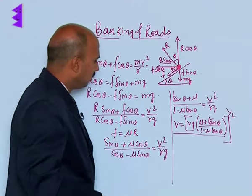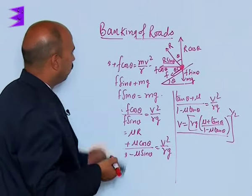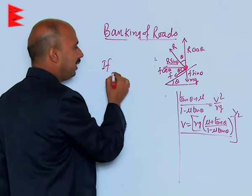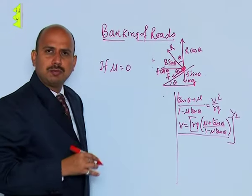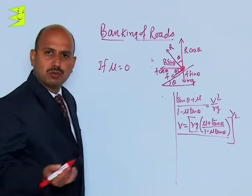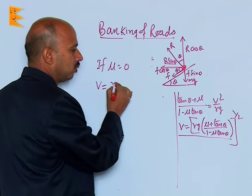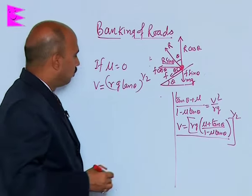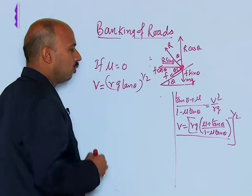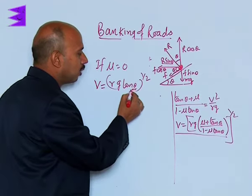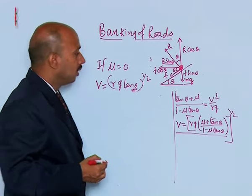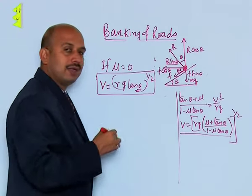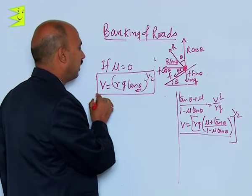Now, suppose we take mu equal to 0, meaning the coefficient of friction becomes zero due to smoothness or other causes. Then v is equal to the square root of rg tan theta. So the speed on the banked road can be managed by giving this angle of inclination, that is by banking. In that case, the road does not cause much wear and tear of the tyre and we can take the safe turn with this speed.